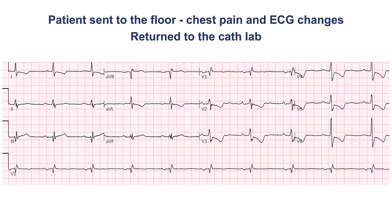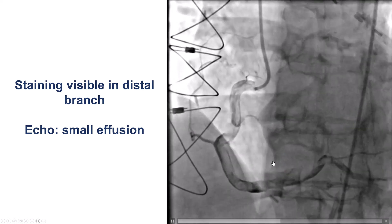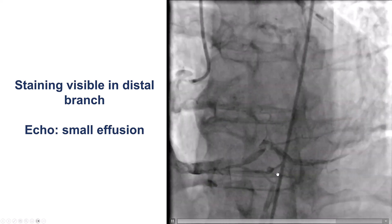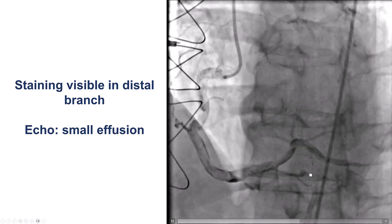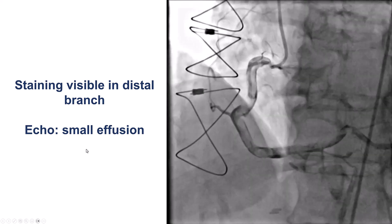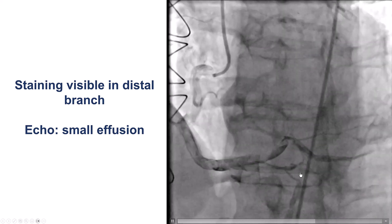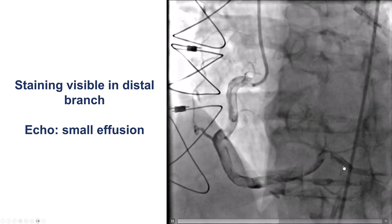The patient was discharged from the cath lab. He went to the cardiology floor, but then developed chest discomfort with ST segment depressions in V3, suggestive of a posterior myocardial infarction. He came emergently back to the cardiac cath lab. The vessel remained open, but there was a stain into a small branch of the right posterolateral, raising concern for a small effusion and perforation. Sure enough, there was a small effusion on echocardiogram — a distal vessel perforation in the small branch of the right posterolateral.